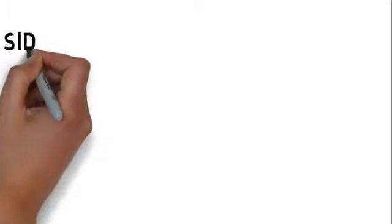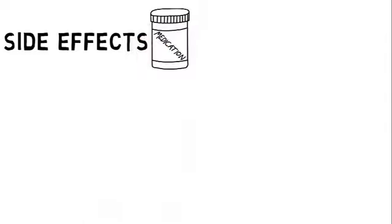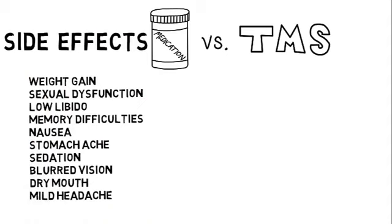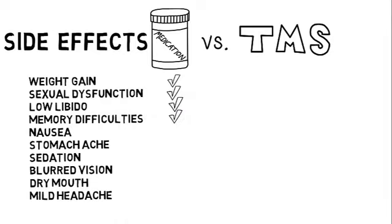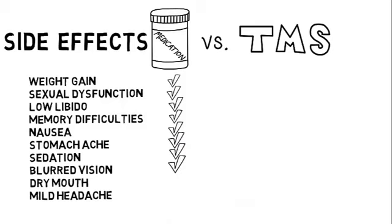And what about the side effects? This is one of the great things about TMS. Because it is a non-systemic focal treatment, TMS doesn't have any of the traditional side effects of psychiatric medications, which have the potential to cause weight gain, sexual dysfunction, decreased sex drive, memory impairment, nausea or stomach aches, problems with sedation, blurry vision, and dry mouth. The most common side effect of TMS is a mild headache during the initial sessions, which disappears over the course of a few days. Most patients, however, report no side effects.